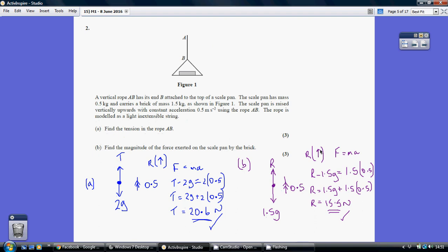So again resolving upwards and using F equals MA we're going to have R minus 1.5g equaling 1.5, being the mass of the brick, times our acceleration of 0.5. Solving for R we get 15.5 newtons.